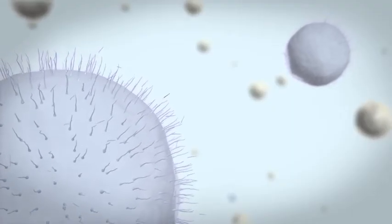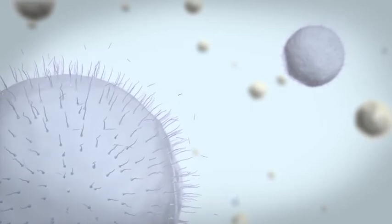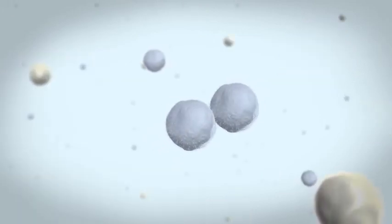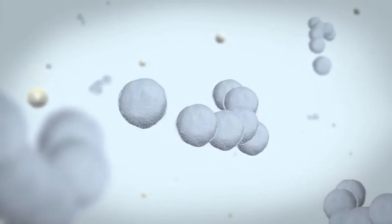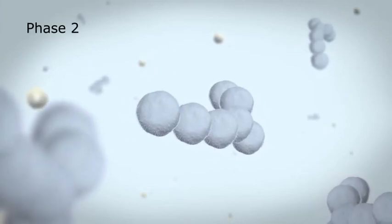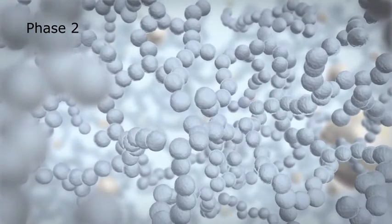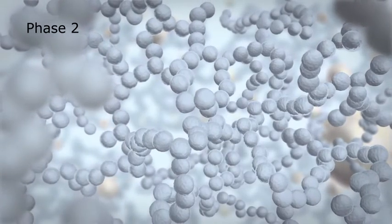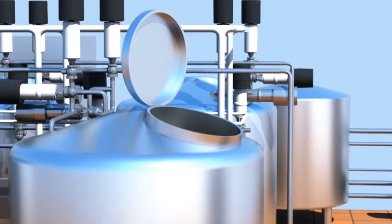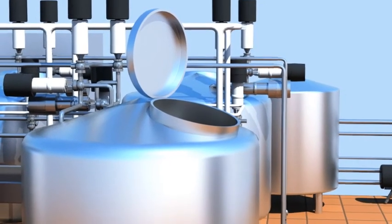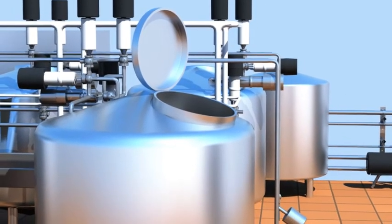As the glycomacropeptides are separated from the casein micelle, the micelle becomes unstable and merges with other unstable micelles, forming a three-dimensional network. This is referred to as phase two of the coagulation process, where the fluid milk is turned into a firmer substance that can be cut into cheese curd.